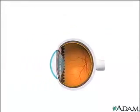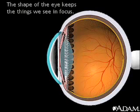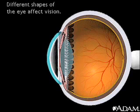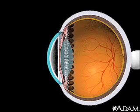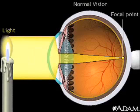Next, let's take a look at a couple of common conditions that cause blurry vision. The shape of the eye is very important in keeping things we see in focus. If the shape of the eye changes, it affects a person's vision. Normally, light is precisely focused onto the retina at a location called the focal point.